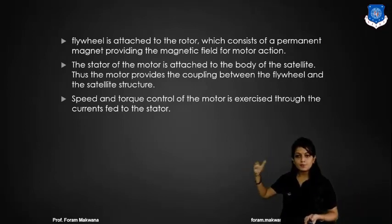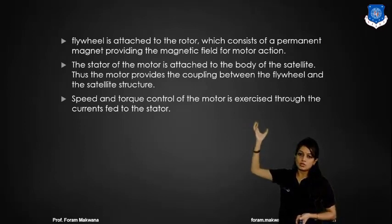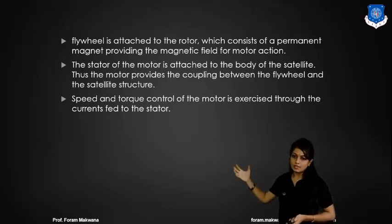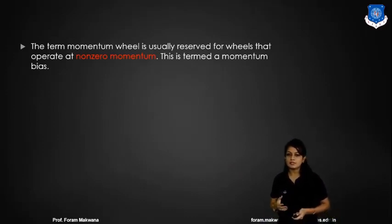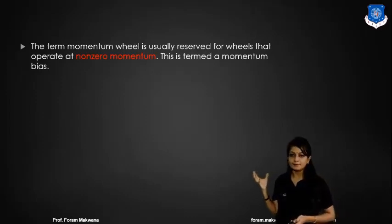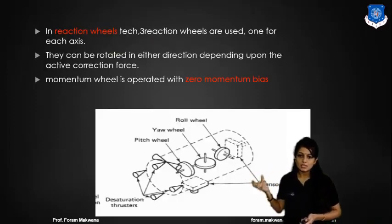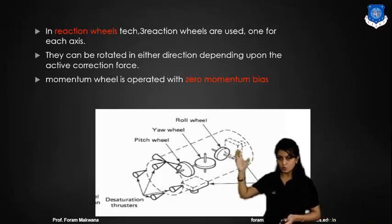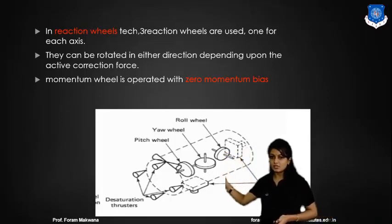The speed and torque generated by the motor are controlled by how much current is applied to the stator. The term momentum wheel is usually reserved for wheels that operate at non-zero momentum, and this is referred to as momentum bias. The momentum wheel stabilization consists of roll, yaw, and pitch wheels, and each wheel changes its direction accordingly. This is all inside the satellite.